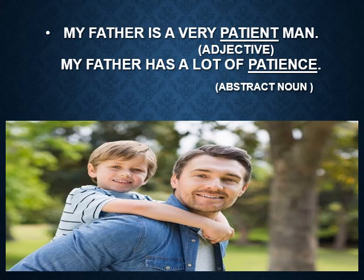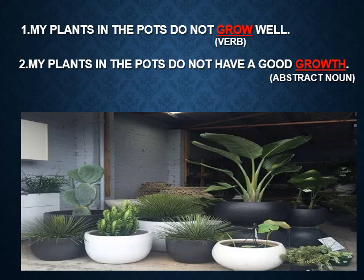Consider: 'My father is a very patient man' — here 'patient' is an adjective. In the second sentence, 'My father has a lot of patience' — here 'patience' is an abstract noun. So abstract nouns can be formed from adjectives. Similarly, 'My plants in the pots do not grow well' — 'grow' is a verb. But 'My plants do not have a good growth' — 'growth' is an abstract noun. So abstract nouns can also be formed from verbs.